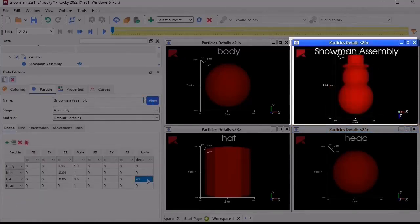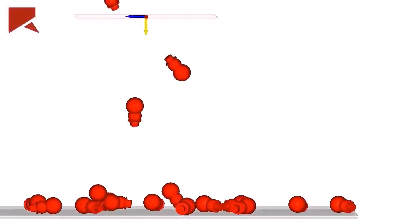The final assembled shape can be previewed in the particles details window and used just like any other rigid, solid particle shape in Rocky.